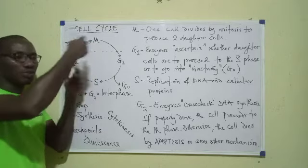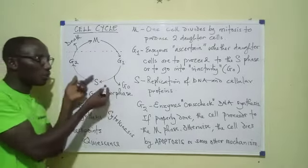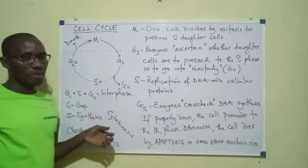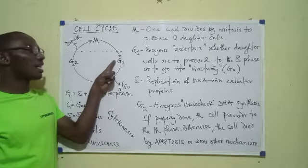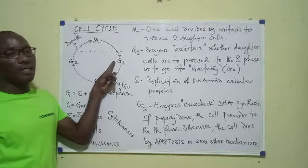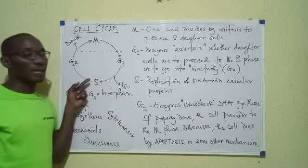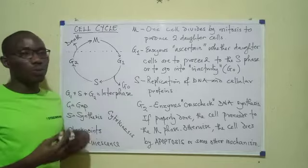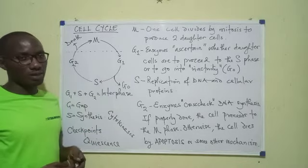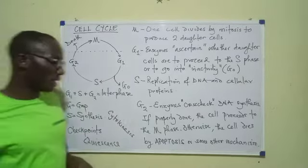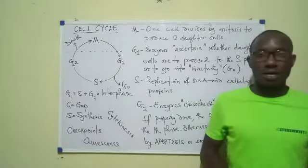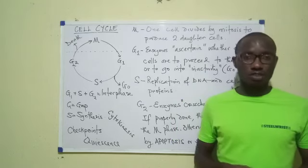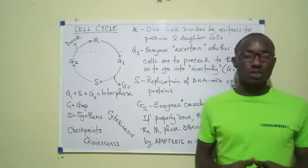At any point where some cells need to be removed from the cycle, they go into G0. Someday you will learn that some cells are arrested at G1, and after a period they may go into G0 or proceed to S, along with some other modifications at that level. So that's what we can cover on the cell cycle. After watching this video, please do watch the video on cell division so you can see the link between the two. Thank you for watching.